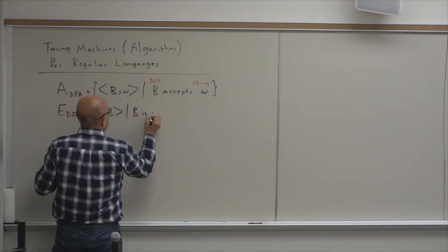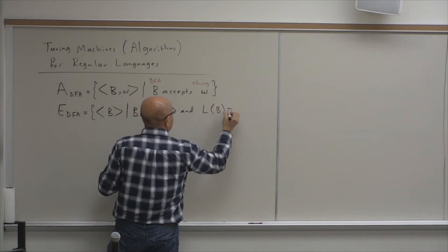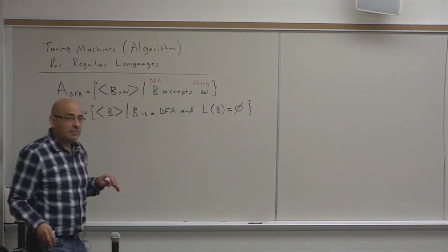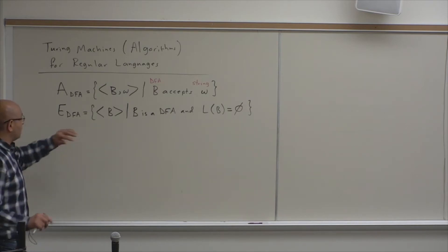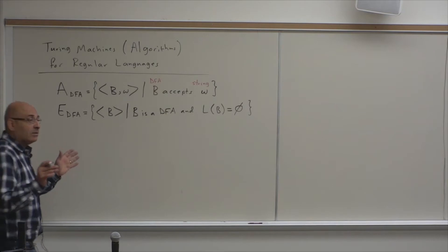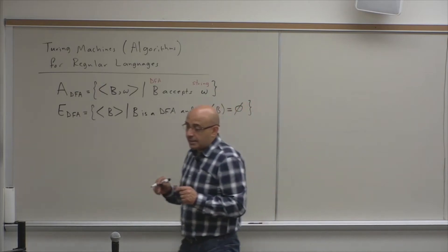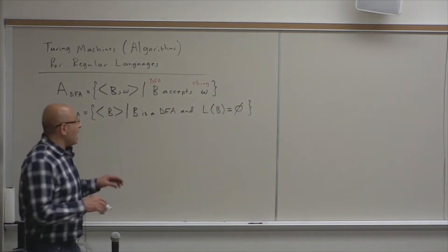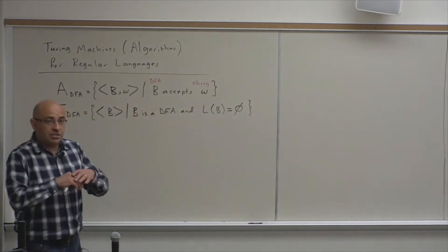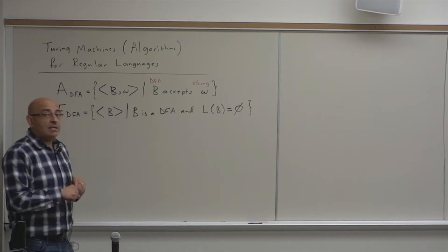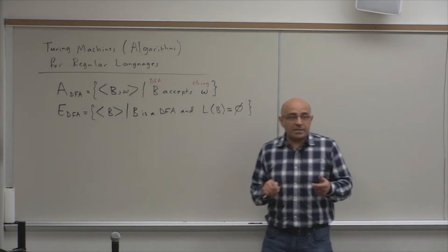E_DFA is the language where B is a DFA and the language of B is empty. How do we construct a Turing machine or algorithm for this? At this point, we use Turing machine and algorithm interchangeably because, according to the Church-Turing thesis, anything that can be done by a computer can be done by a Turing machine.